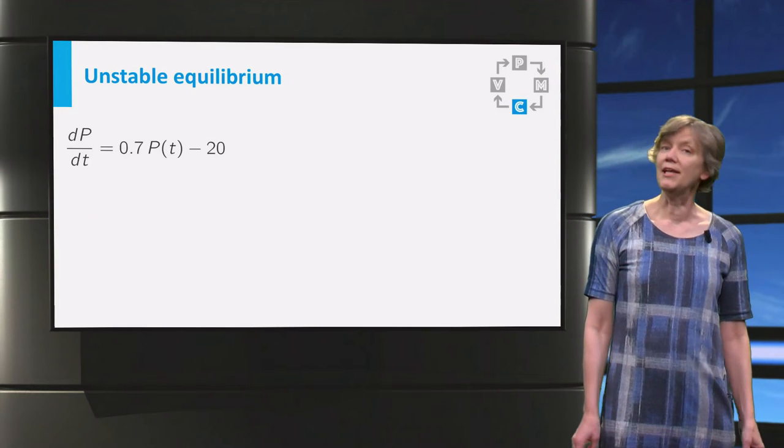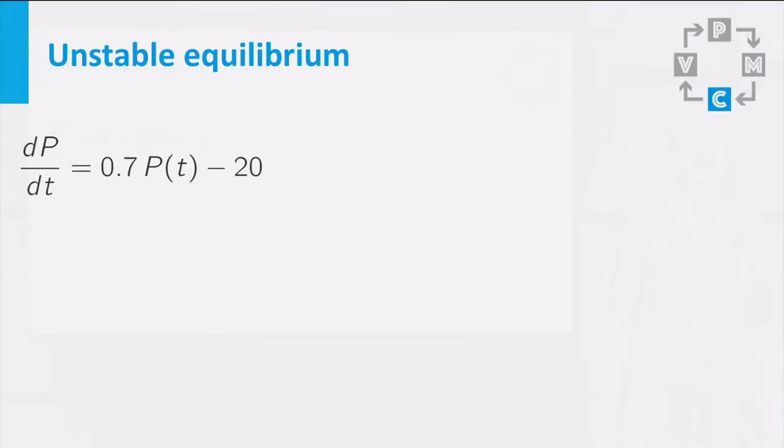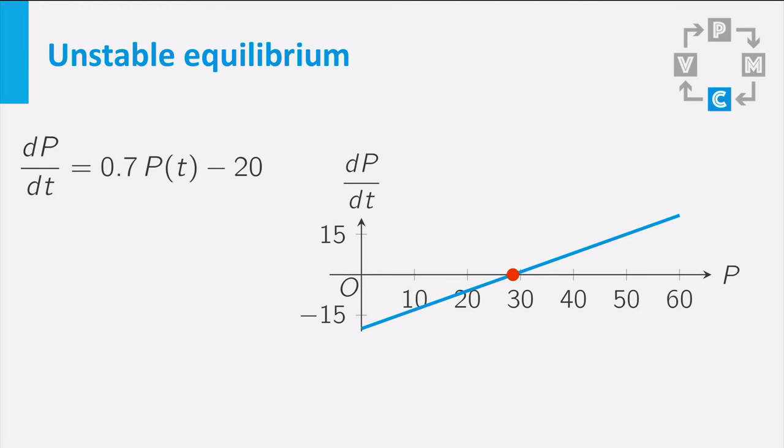Then we calculated the phase line. The graph of the derivative dP/dt as a function of P is an increasing line. And this is the resulting phase line. The dP/dt equals 0 in the equilibrium solution of approximately 28 and a half fish.